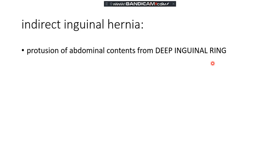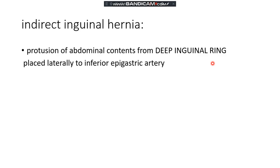Starting with indirect inguinal hernia: the protrusion of abdominal contents occurs from the deep inguinal ring, placed laterally to the inferior epigastric artery. If the content is being protruded lateral to the inferior epigastric artery, it is indirect. If it is coming out from the medial portion, then it is direct.